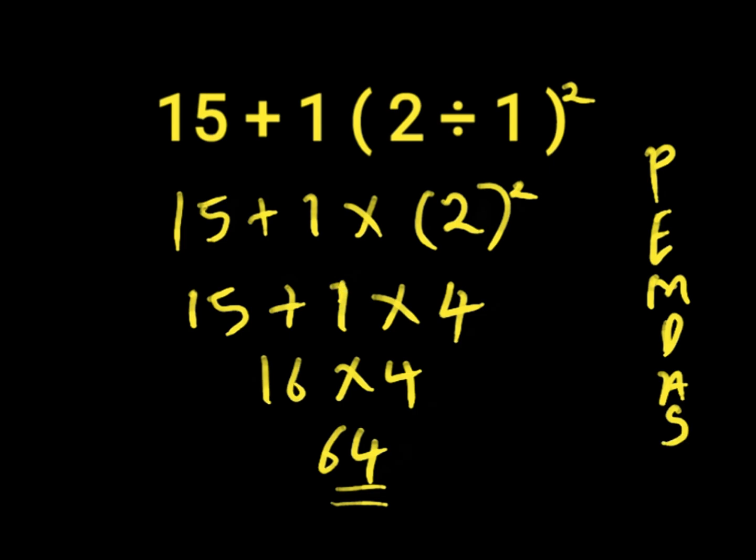Multiplication and division have equal priority, as do addition and subtraction, working from left to right in order to arrive at the correct answer. Let's solve this expression the right way.